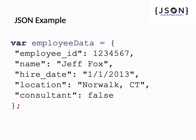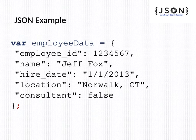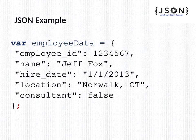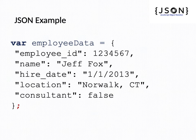We will see one example. In the JSON example, we have created a JSON object with the name EmployeeData. EmployeeData equals employee_ID in double quotes, colon 1234567, comma. That is a name-value pair. The name is employee_ID — a string name enclosed in double quotes — and the value is an integer, so it is not enclosed in double quotes. If it is a string value, it should be enclosed in double quotes. The second pair: name colon Jeff Fox — Jeff Fox is a string value, so it is enclosed in double quotes. Name and values are joined using a colon, and a comma separates each name-value pair.